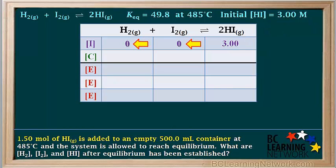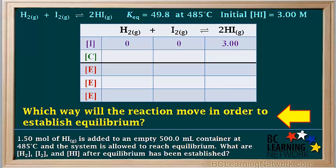We start by entering the initial concentration of HI as 3 in the ICE table, leaving out the molarity unit to keep it simple. The question doesn't mention adding H2 or I2 to the container — only HI is added — so we can assume the initial concentrations of H2 and I2 are both zero. Our next step is to find which direction the reaction will move to reach equilibrium.